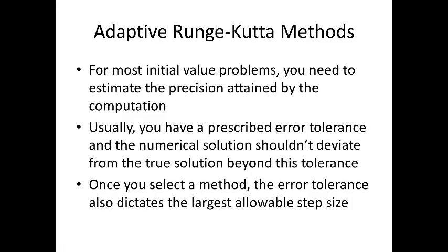For the initial value problems that we've been looking at, you need to estimate the precision attained by the computation. Usually you have some prescribed error tolerance and the numerical solution shouldn't deviate from the true solution beyond this tolerance. Once you select a method, the error tolerance will also dictate the largest allowable step size. Of course, this is more difficult than it appears on initial glance. Even if we consider only the local truncation error, determining an appropriate step size may be difficult. Moreover, having a small step size is needed for one portion of the solution curve, whereas you might need a larger one somewhere else in calculating the curve.